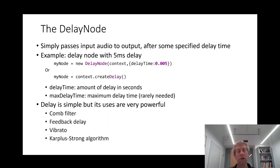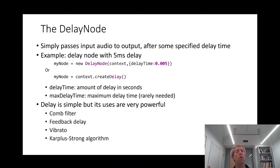There are two possible parameters. There's the delay time which we've just discussed, and optionally — rarely needed — is the maximum delay time, maxDelayTime. This is there because when you set a delay time you're essentially creating a buffer so that you store samples all the way back to however far back in time the delay is — the maximum delay that you might want to work with.